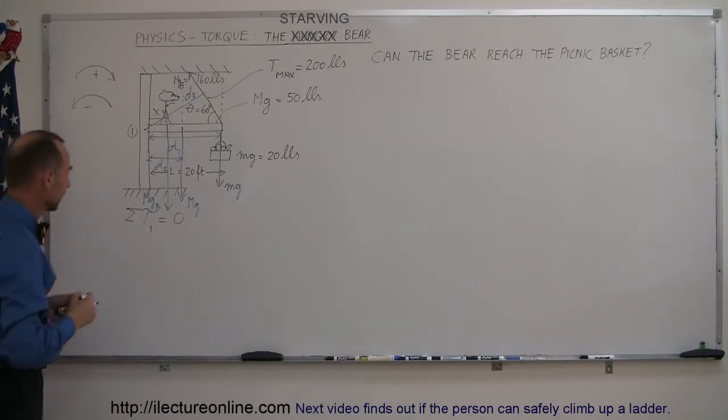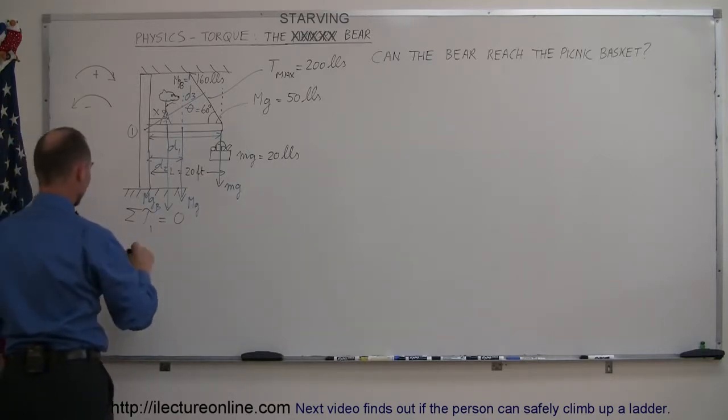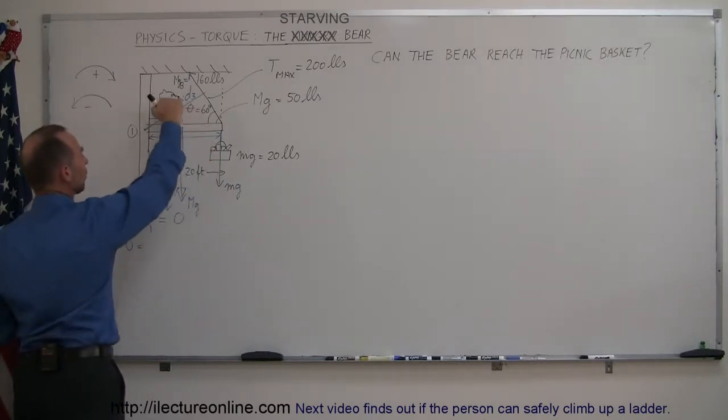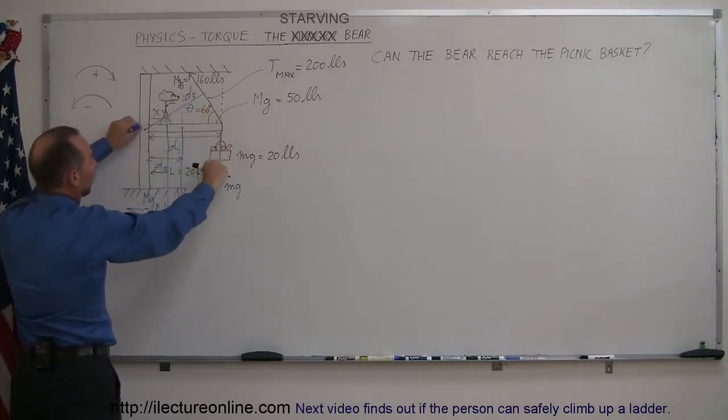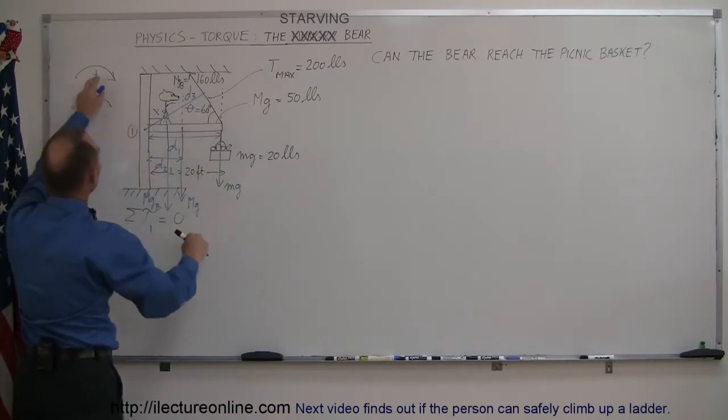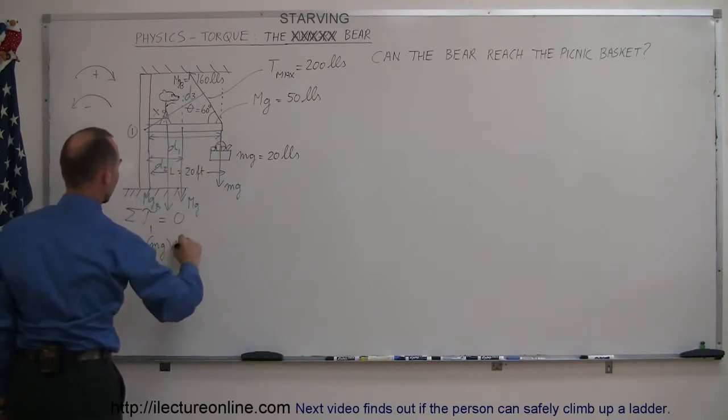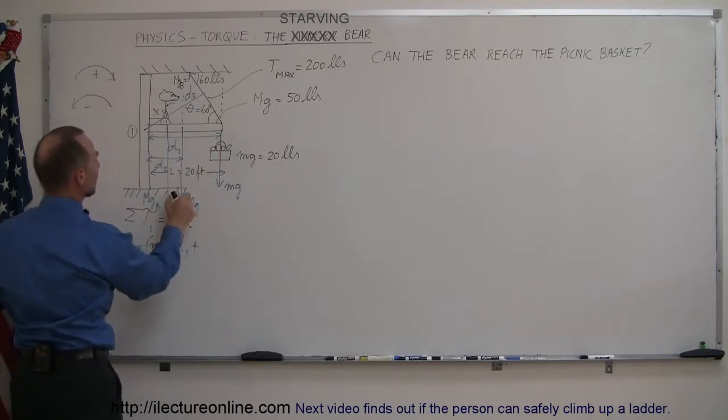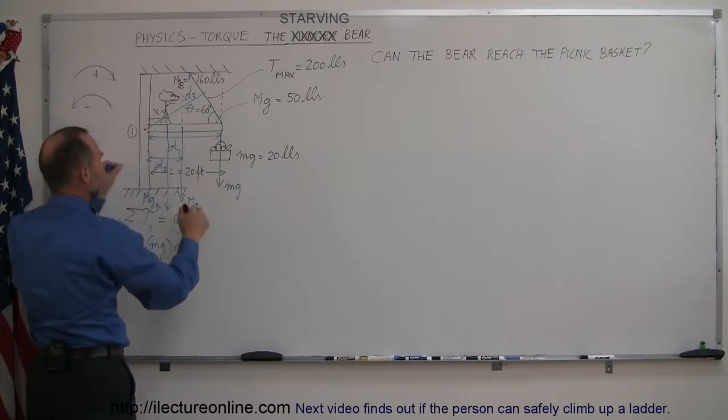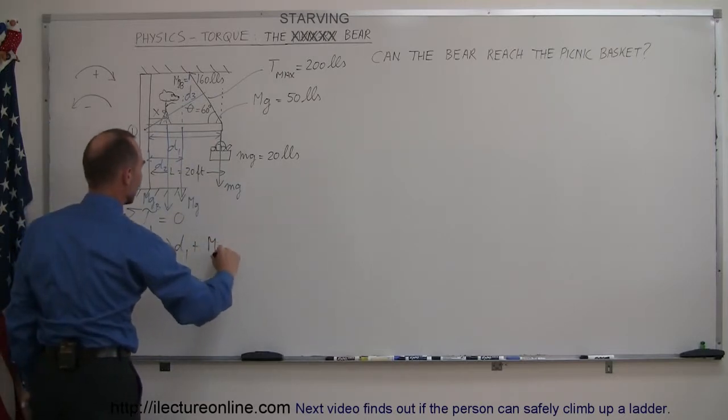Now we're ready to set up the equation. So we're going to add up all the torques. They add up to zero. So zero equals, let's start with the MG which acts in such a way that the beam would rotate in a clockwise direction. That makes it a positive torque. So we have MG times the distance, that would be D1. Plus we have the weight of the beam which also acts in this direction. So that would be big MG times the distance D2.